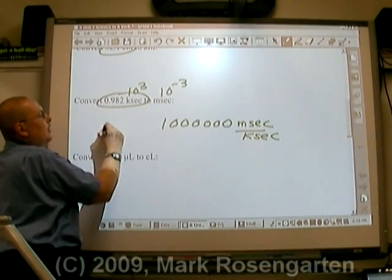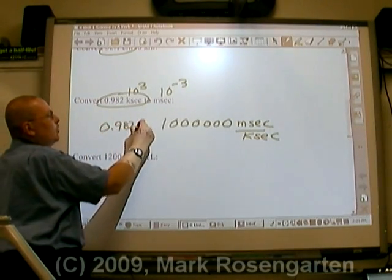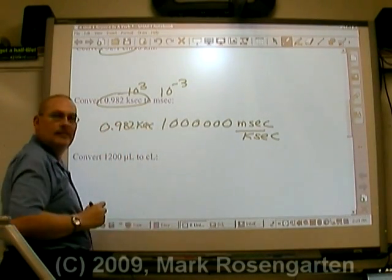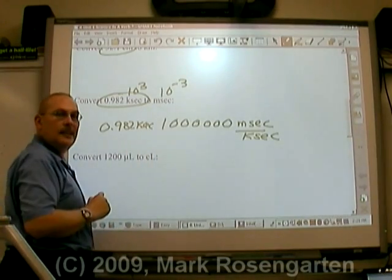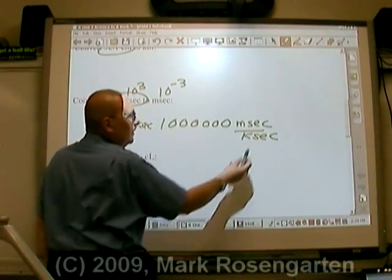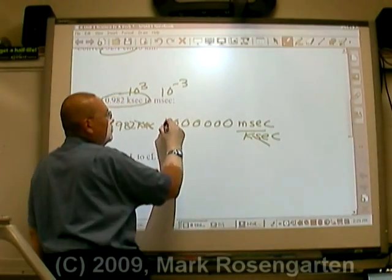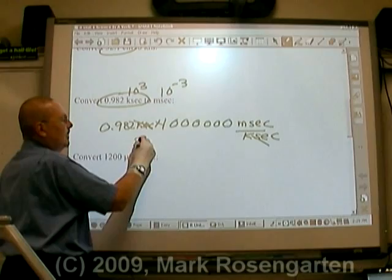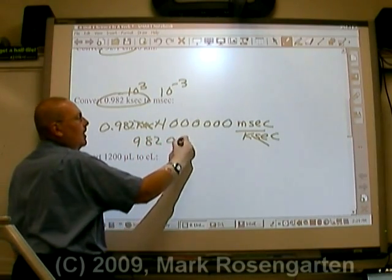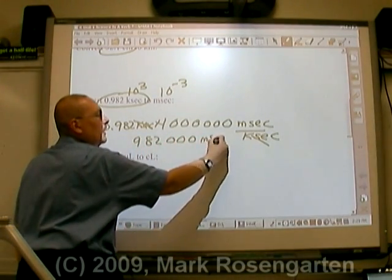We're given 0.982 kiloseconds. We have kiloseconds as the unit we're going to convert. Kiloseconds is in the denominator. To cancel it out, we have to multiply. 982,000 milliseconds. And that's how you do conversions.